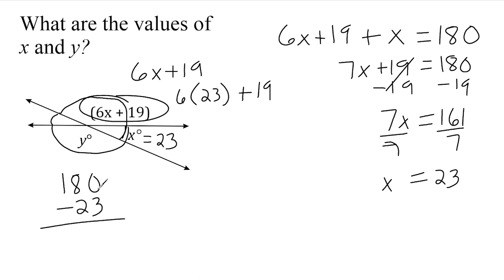So if we take 180 minus 23, that ends up giving us 157 degrees. Or if we do 6 times 23, that ends up giving us 138 plus 19 more. And when you add these together, you also get 157 degrees.